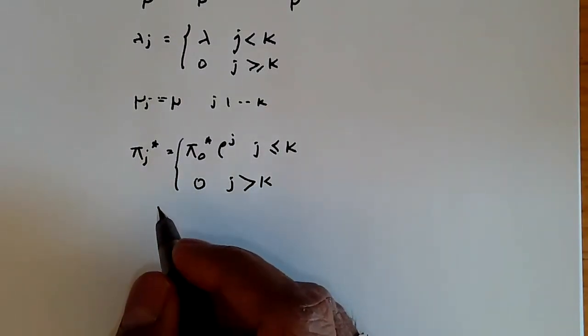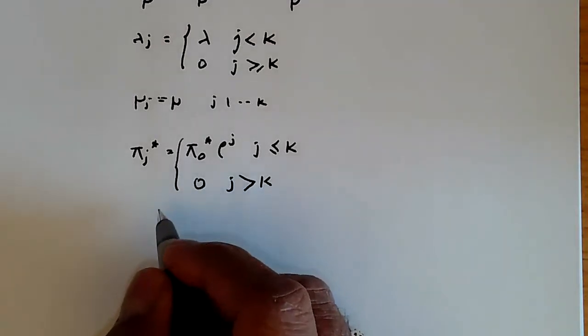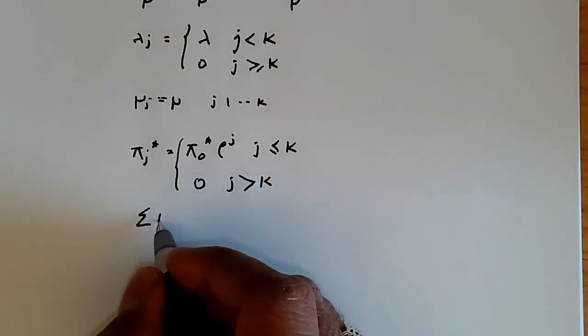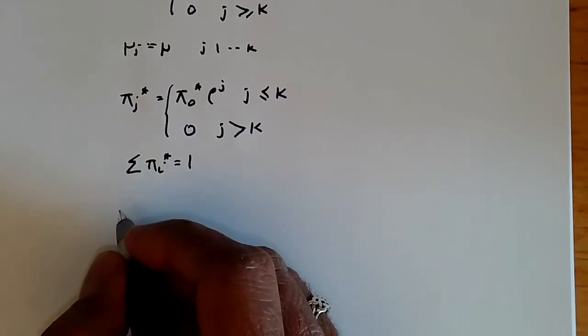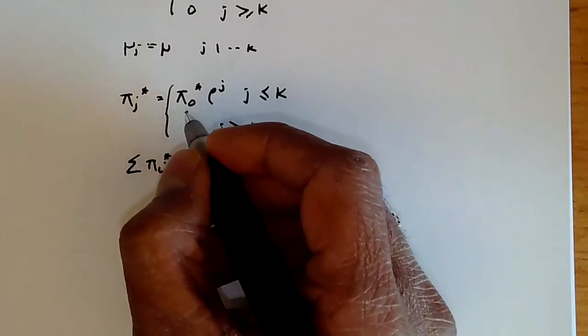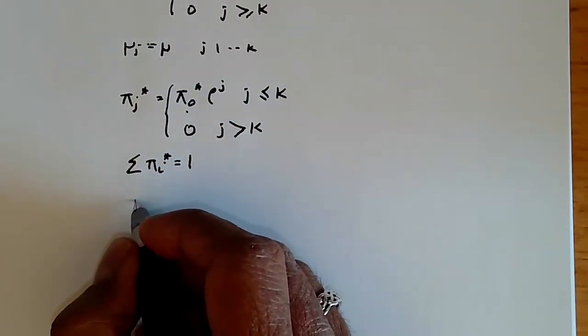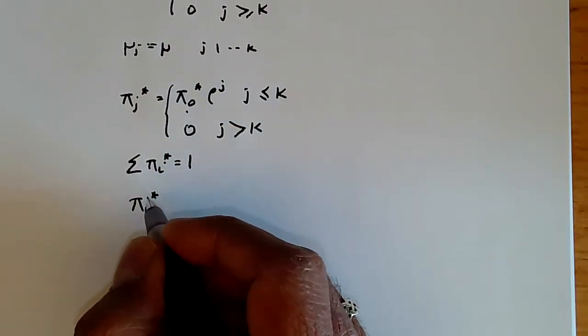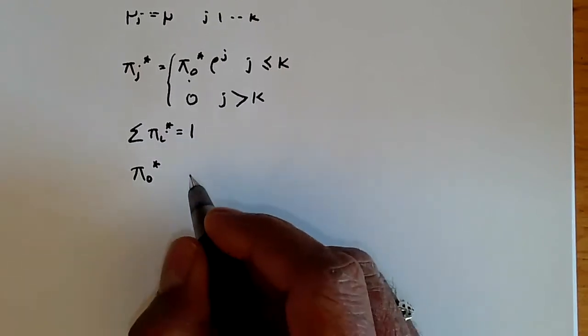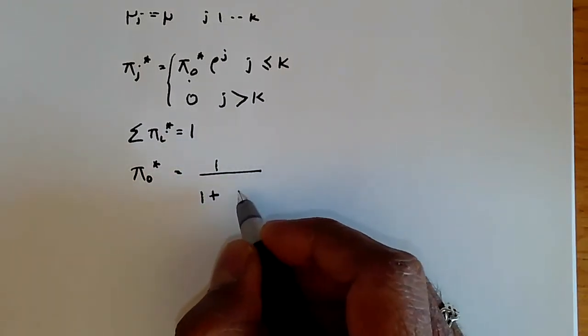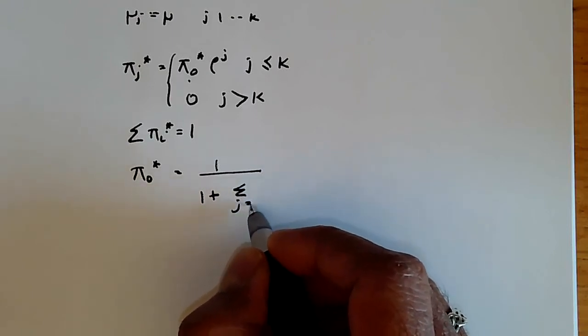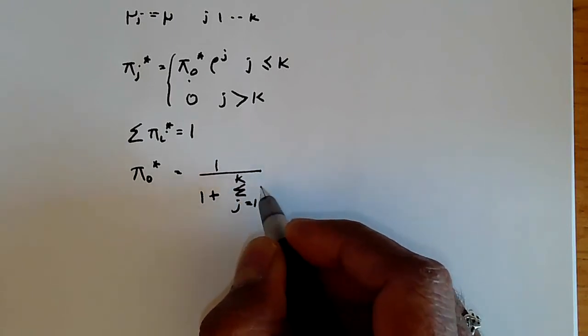But this is affecting pi 0 star because we need sigma pi i star to be 1. So pi 0 star is going to change a little bit, and that's going to affect this in this way. So pi 0 star is going to be given by 1 over 1 plus, and now here we have a bounded sum,